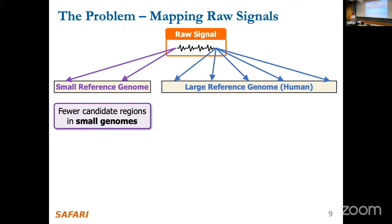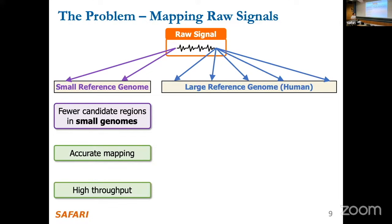The reason existing methods don't scale is that for small reference genomes you get few candidate regions. You get a bunch of candidates from seeding, and if you have only a few — because the reference database is small — it's easier to pick the right one among candidates, and you can do it at high throughput because you have a smaller database to search.